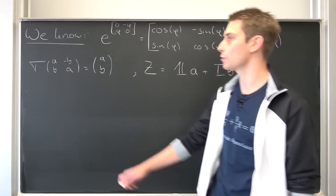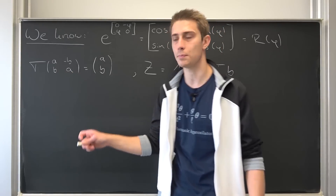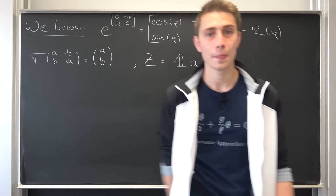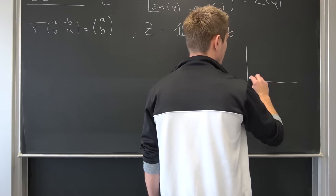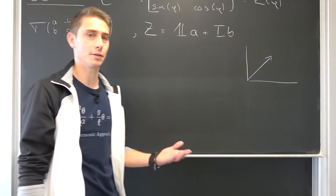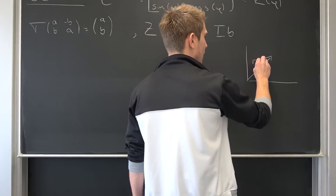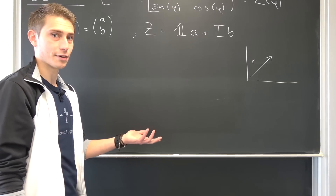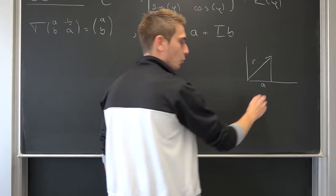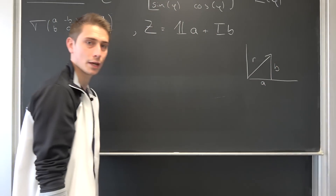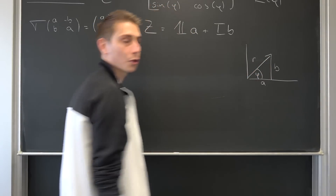Now I would like to work with our linear transformation T of (a, -b; b, a), which maps to the vector (a, b) in R². We are going to take a look at the vector (a, b) simply in the plane. This is our vector (a, b), and as mentioned before, a vector has a certain length r. We can find this length r because we have an a-coordinate and a b-coordinate making up our vector.